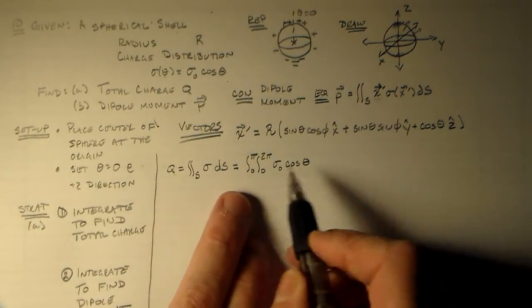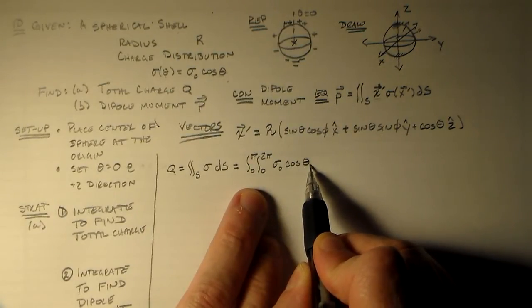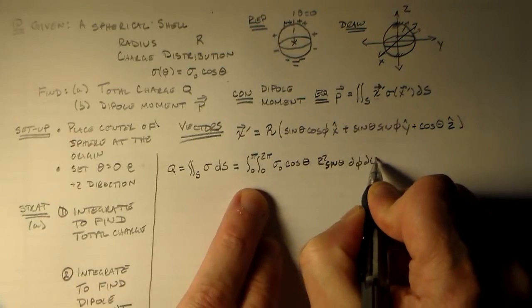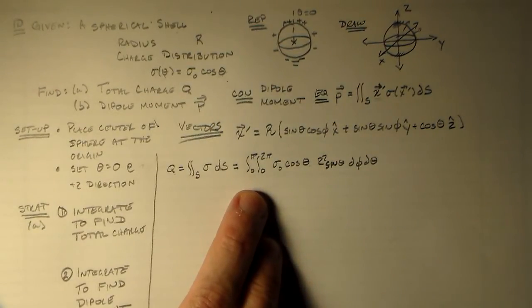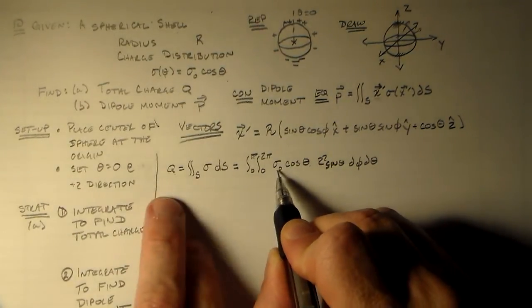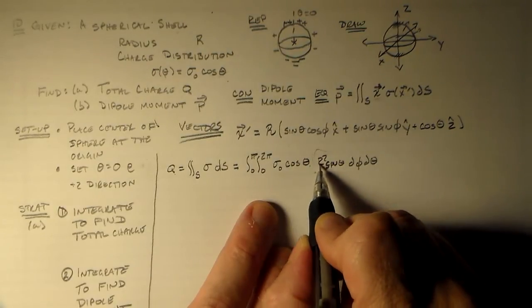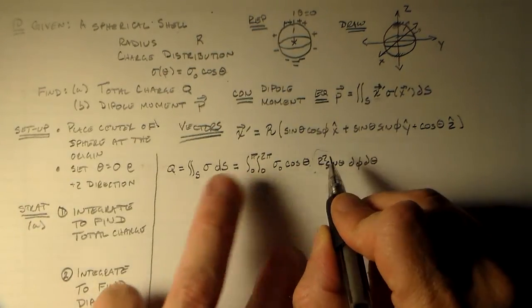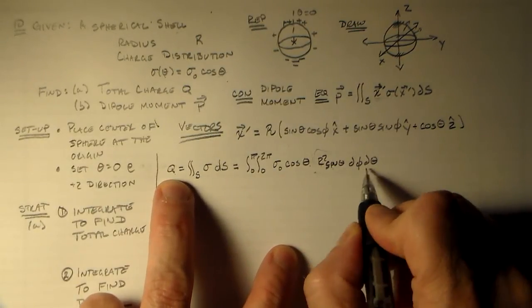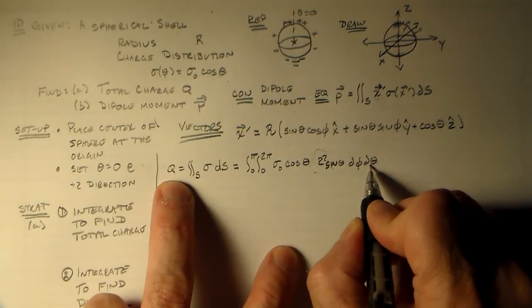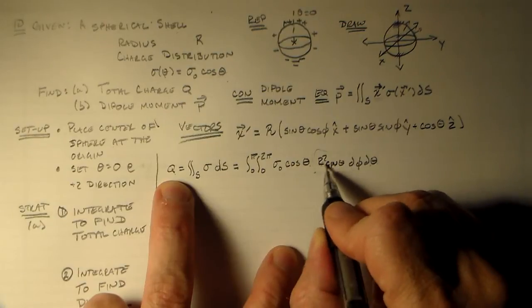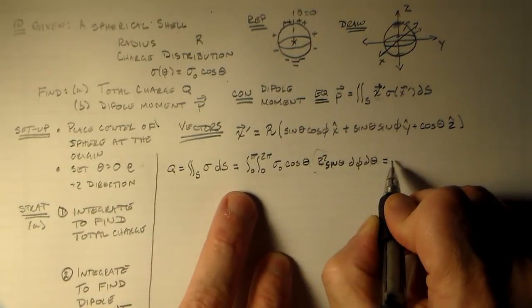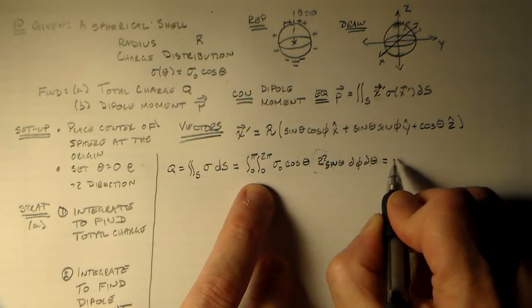So when we integrate the charge, now we need to get our volume element correct. Our surface element is R squared sine theta d phi d theta. You can tell right away that we need this whole thing, the R squared sine theta. Just because you need the R squared multiplied by the sigma naught to get your Q. You also know that because the only one of these differentials that doesn't have anything, doesn't have some constant associated with it or some other variables associated with it is the dr.